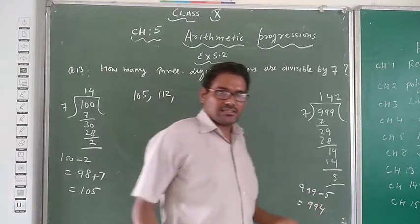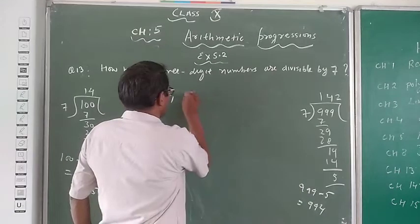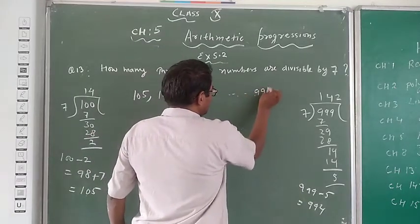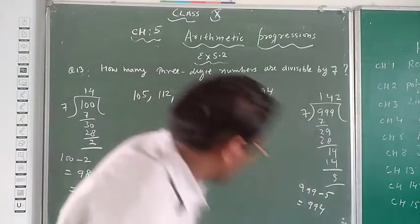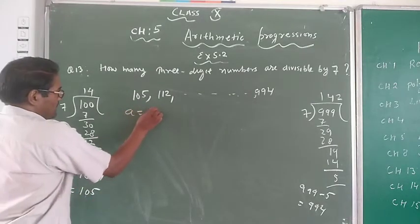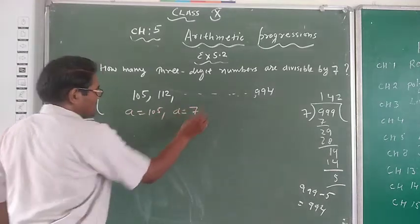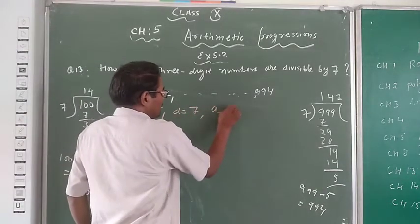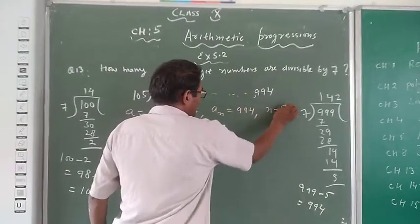Now 994 is the largest three-digit number which is divided by 7. So we will use 994. Now a is 105, d is 7, and n we have to find.